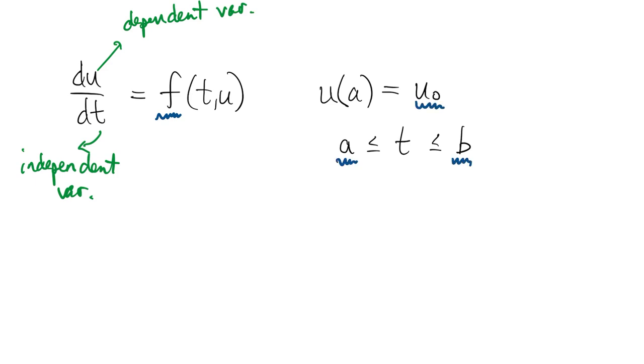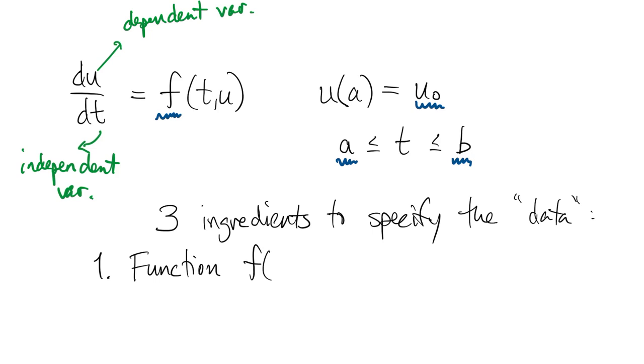There are three things that we need in order to specify a particular ODE. They provide the data to the problem. First is this function f of t and u, which defines the ODE. Second is an interval for t, which defines the domain of the solution. And third is the initial value of the solution.